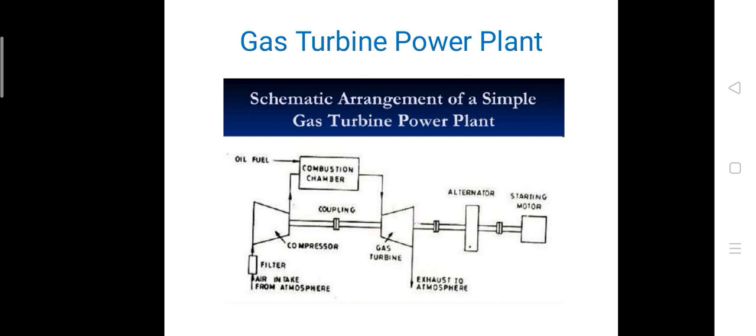From the compressor, the air enters the combustion chamber. Parallelly, the fuel is sprayed into the combustion chamber, producing combustion. The output of the combustion chamber is the burnt gas, or hot gas. The hot gas enters the gas turbine and causes it to rotate, which rotates the shaft of the alternator — that is, the generator — giving us power. The exhaust gases go to the atmosphere.